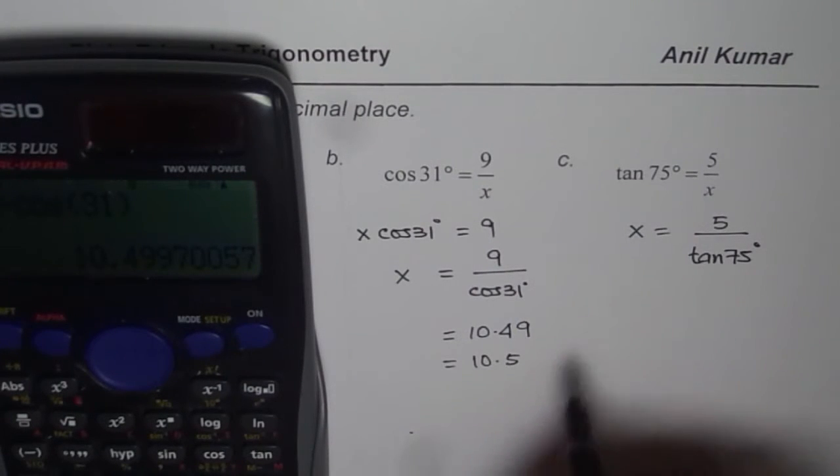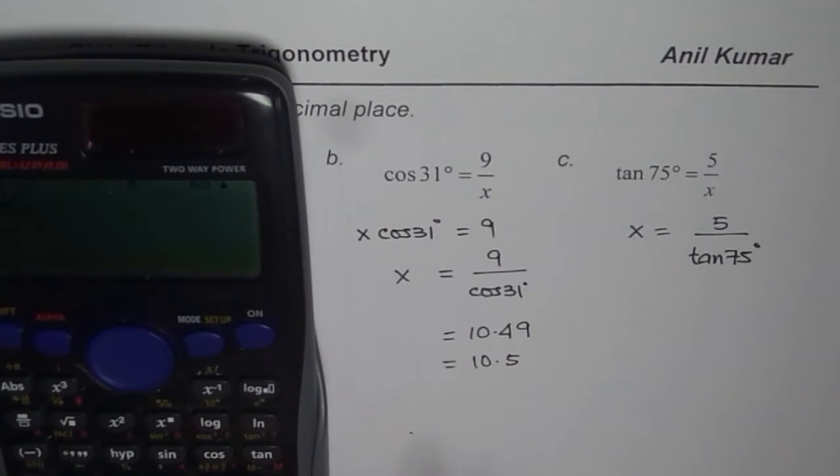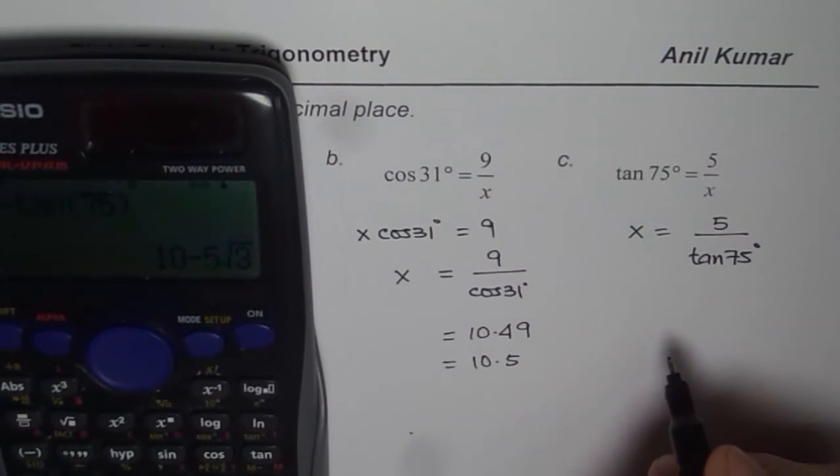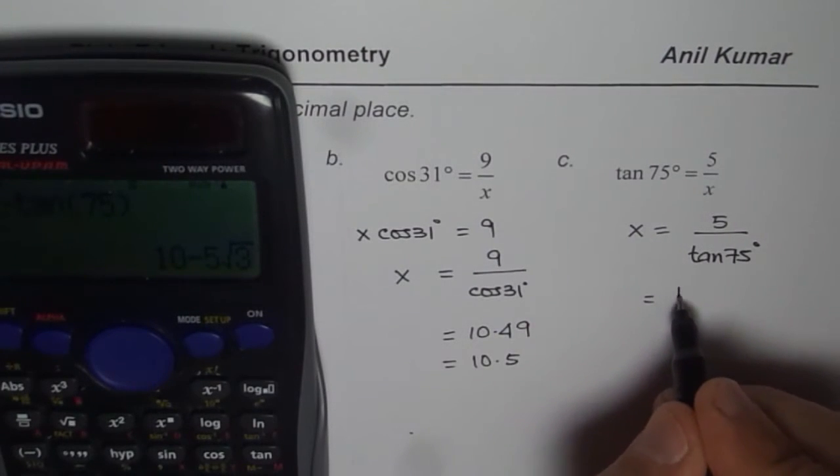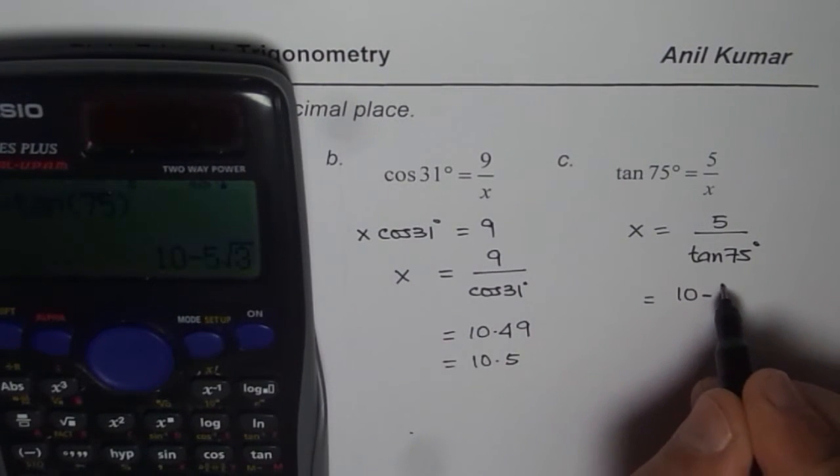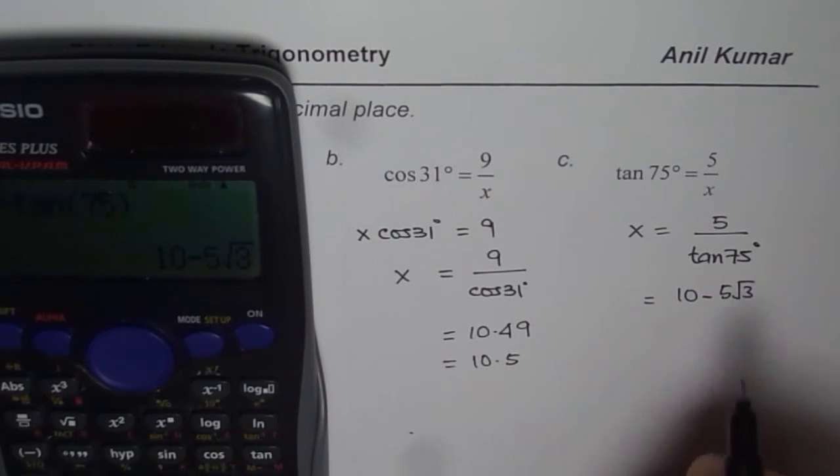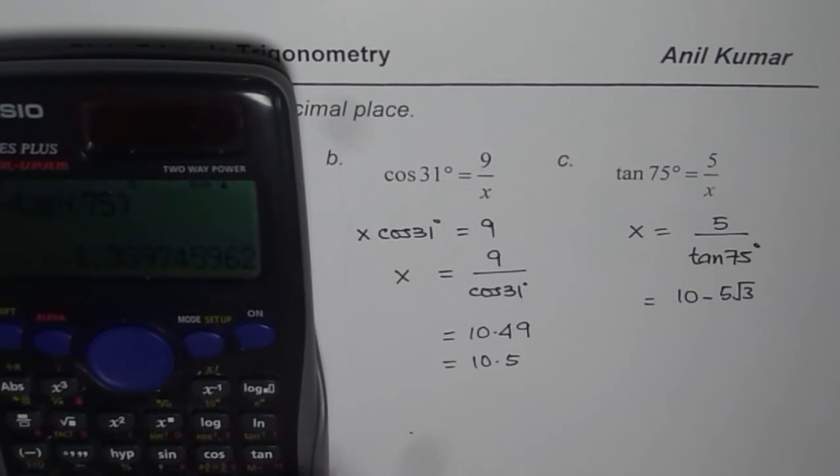The last one here is x equals 5 divided by tan. So, tan 75. These ratios are already there on the calculator, so you can find them and use just as I am using. They may at times give you exact answer. As in this case, 5 square root 3. But if you want to round, you have to convert to decimals.